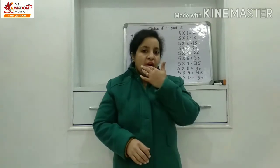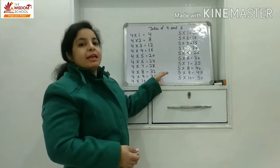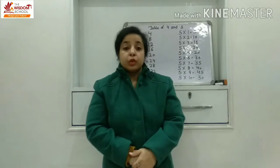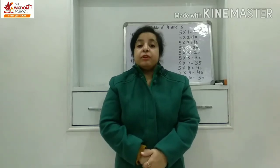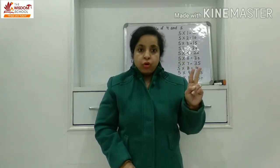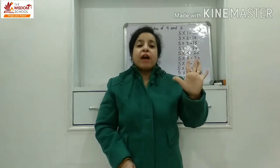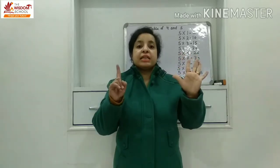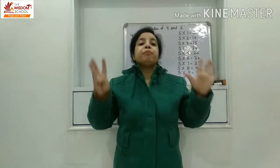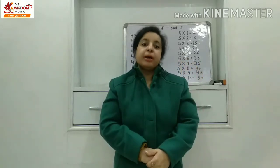Bita, two aur three ka table toh aap aise hi mere saath bologe. Speak with me: Two ones are two. Two twos are four. Two threes are six. Two fours are eight. Two fives are ten. Two sixes are twelve. Two sevens are fourteen. Two eights are sixteen. Two nines are eighteen. Two tens are twenty. Toh ye tha hamara two ka table.